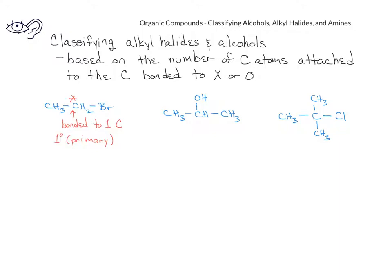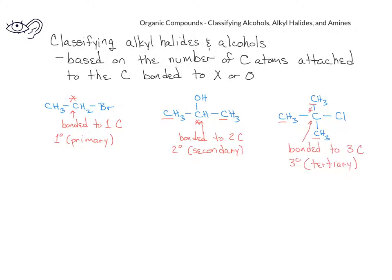In the second example, we have a hydroxyl group bonded to the second carbon in a three-carbon chain. The carbon bonded to the hydroxyl group will be indicated with an asterisk. This carbon with an asterisk is directly bonded to two other carbons. Therefore, we would call this alcohol a secondary alcohol. In the third example, in which a carbon bonded to the halogen is directly bonded to three other carbons, we would call this a tertiary alkyl halide because the carbon attached to the halogen atom is directly bonded to three carbon atoms.